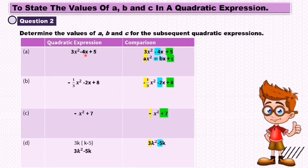(a) 3s² - 4s + 5. So normally we will compare with the general form of quadratic expression ax² + bx + c. From there we will know a is in front of x squared, b is in front of x, and c is a number. So a = 3, b = -4, c = 5.